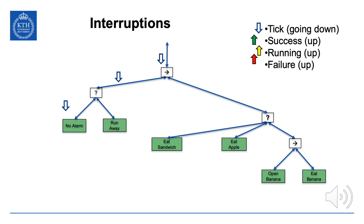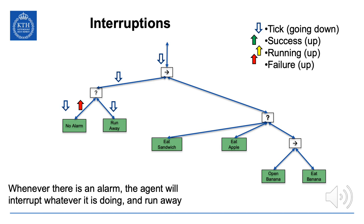But imagine at some point no alarm returns failure because there is an alarm. The fallback then ticks the next child — run away — and the agent immediately stops eating, or opening a banana, or whatever it was doing, and runs away until no alarm returns success again, meaning it can't hear the alarm or the alarm has stopped. Whenever there's an alarm, the agent will interrupt whatever it's doing and run away. That's how behavior trees handle interruptions.